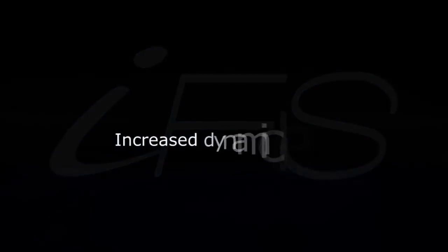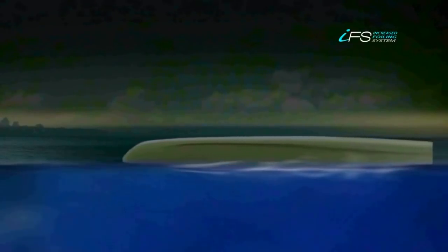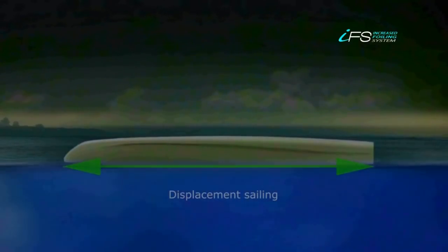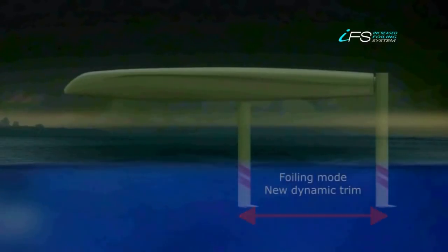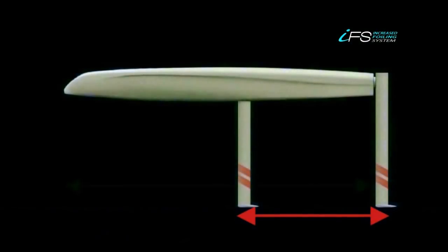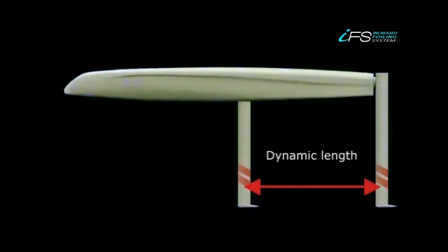Increased dynamic length: A boat, when sailing, experiences friction on the surface of the water that limits its speed. In navigation with displacement, the trim of the ship is one, and when passing to the flight mode, the friction will be significantly reduced, but the new dynamic trim will be much smaller, also reducing the dynamic length.